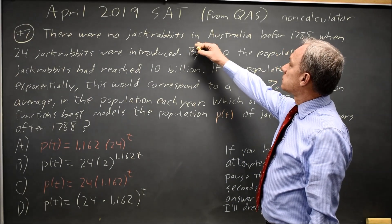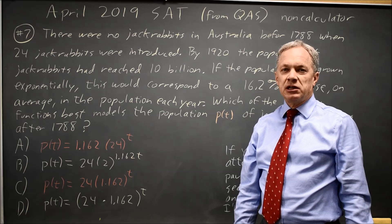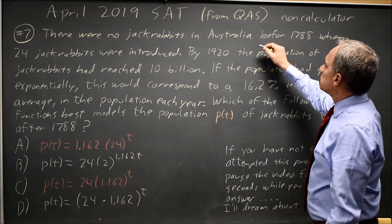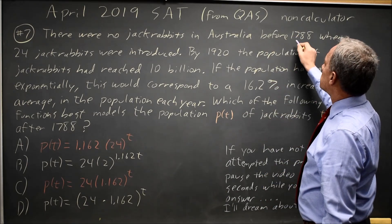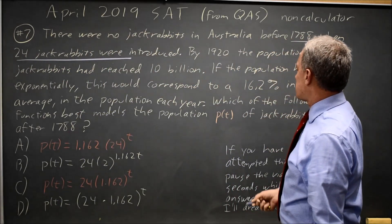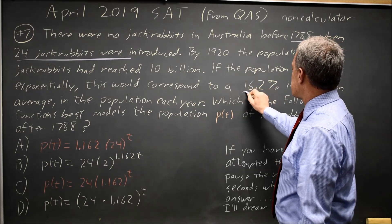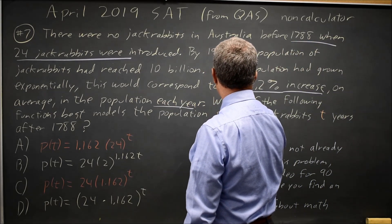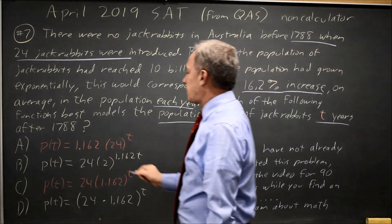In this question they give you a word problem and ask which of the following functions best models the population of jackrabbits. They tell us there were no jackrabbits before 1788, when 24 jackrabbits were introduced. If the population grew exponentially, this is a 16.2% increase each year, where P of T is the population of jackrabbits and T is years after 1788.